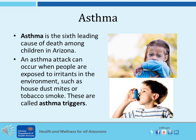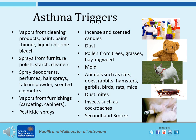Asthma is the sixth leading cause of death in children in Arizona. An asthma attack can occur when people are exposed to irritants in the environment such as house dust mites or tobacco smoke — these are called asthma triggers. Important asthma triggers include vapors from cleaning products, paint, and paint thinners; sprays from furniture polish, starch, and cleaners; spray deodorants, perfumes, hair spray, talcum powder, and scented cosmetics; vapors from furnishings; pesticide sprays; incense and scented candles; dust; pollen from trees, grasses, hay, and ragweed; molds; animals such as cats, dogs, and rabbits; dust mites; insects such as cockroaches; and secondhand smoke.